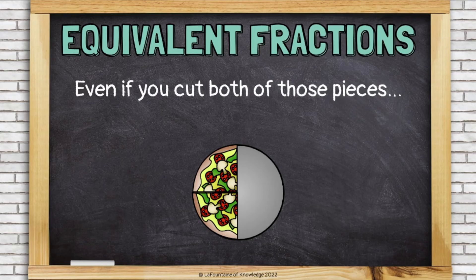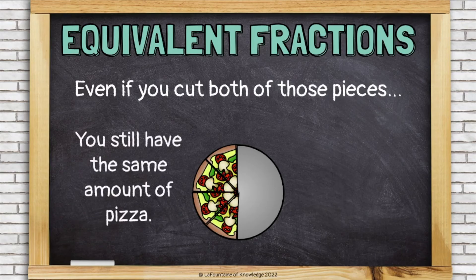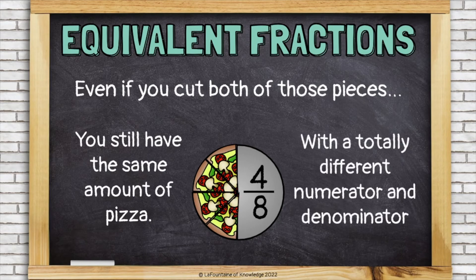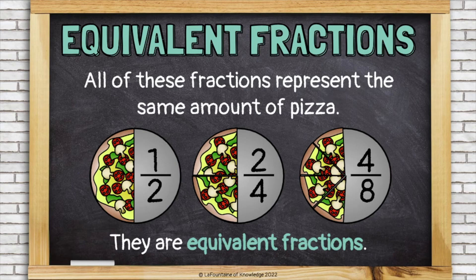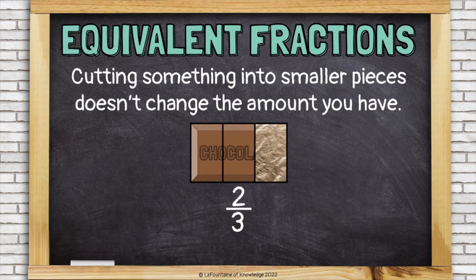Even if you cut both of those pieces, you still have the same amount of pizza, with a totally different numerator and denominator. Now we would write the fraction four-eighths. All of these fractions represent the same amount of pizza. They are equivalent fractions. Cutting something into smaller pieces doesn't change the amount you have.